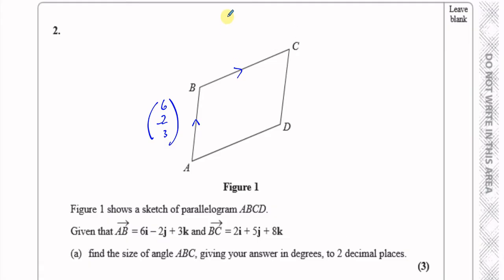I'll write it as a column vector. And BC is 2i plus 5j plus 8k, so you can write 2, 5, and 8.